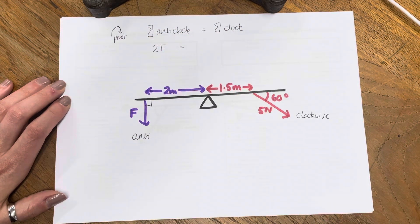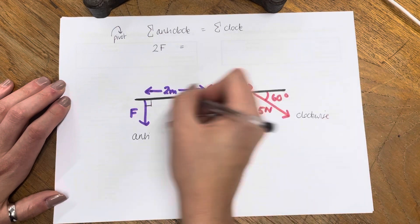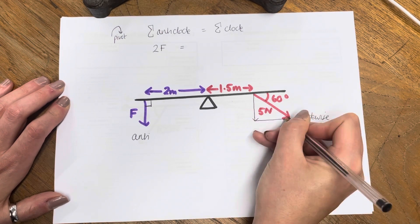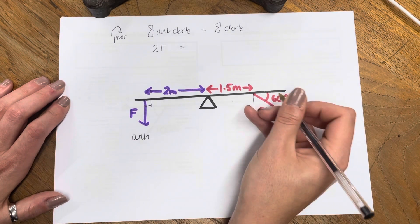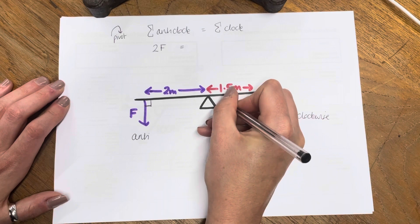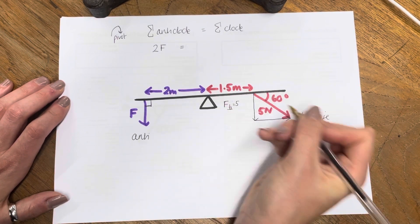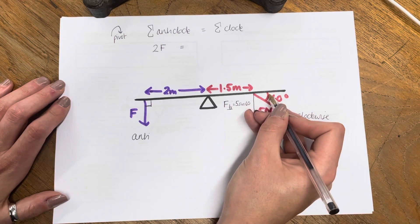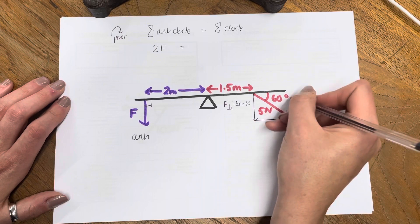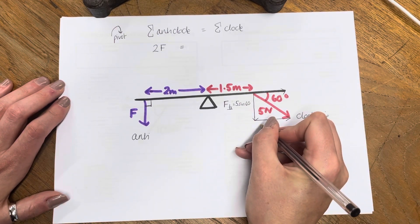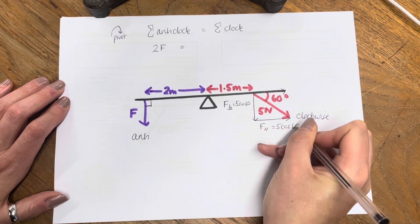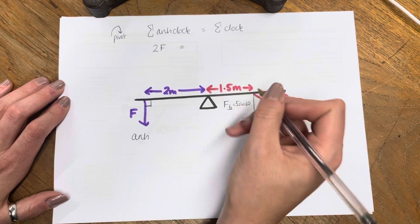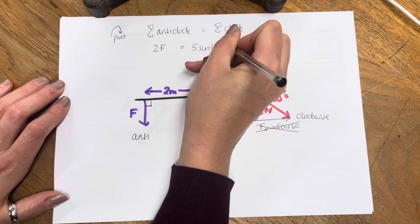So 2F equals the clockwise moment, which is harder. This force is not perpendicular to the line of action to this bench here, but we can split it into two components. We can split it into a perpendicular part and a parallel part. Now, if this angle here is 60, the perpendicular force equals 5 Newtons times sine 60 — because if it's not touching the angle, it's not cosine, it's sine. The parallel force would be 5 cos 60, but we don't care about that. We only care about the perpendicular force. So the moment is 5 sine 60 times 1.5.